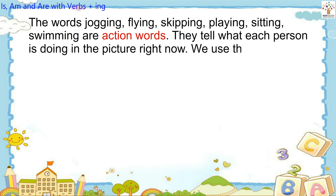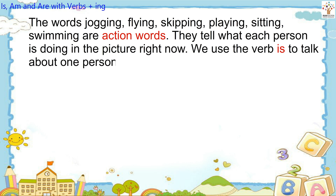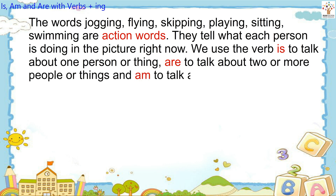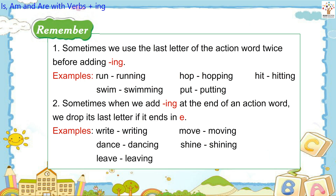We use the verb 'is' to talk about one person or thing, 'are' to talk about two or more people or things, and 'am' to talk about oneself.